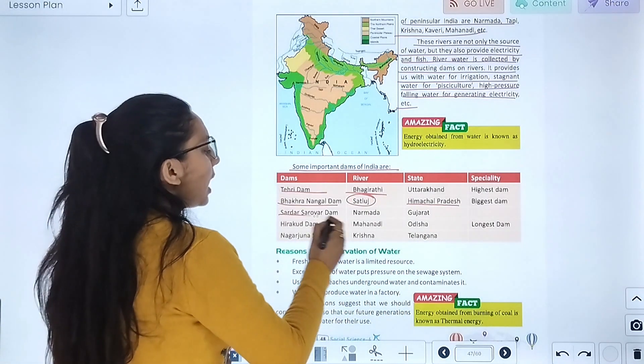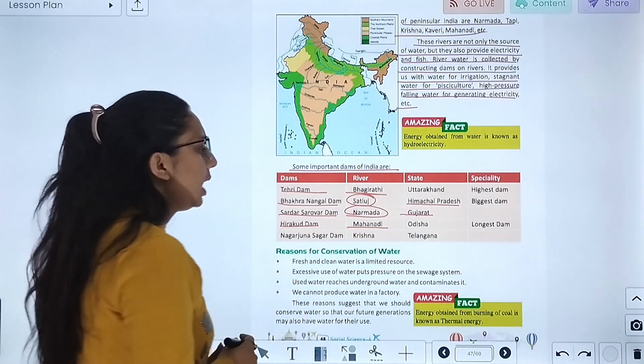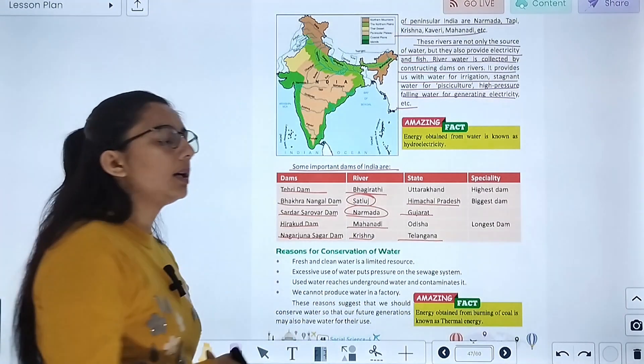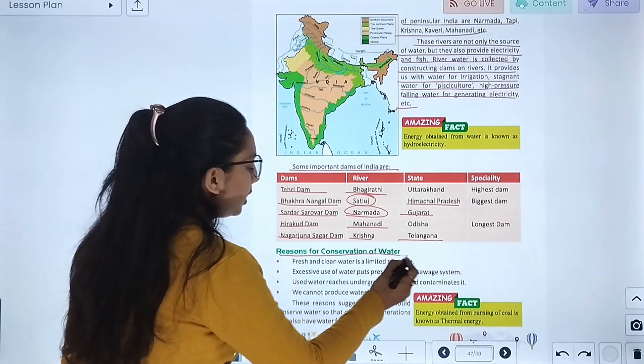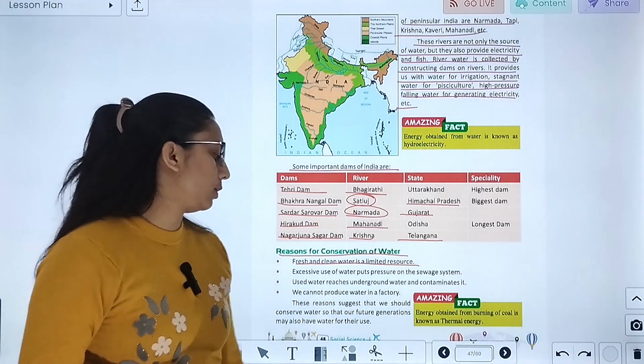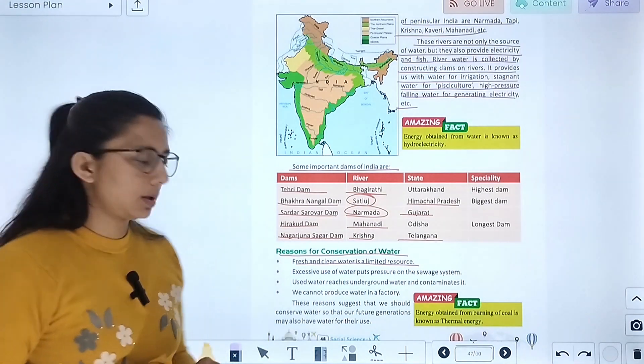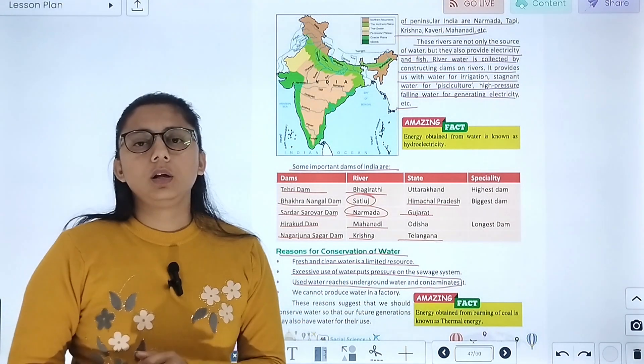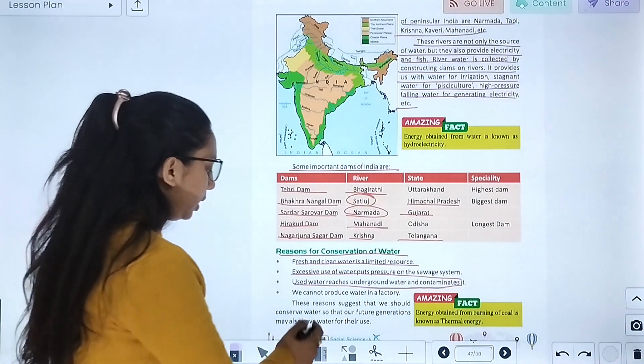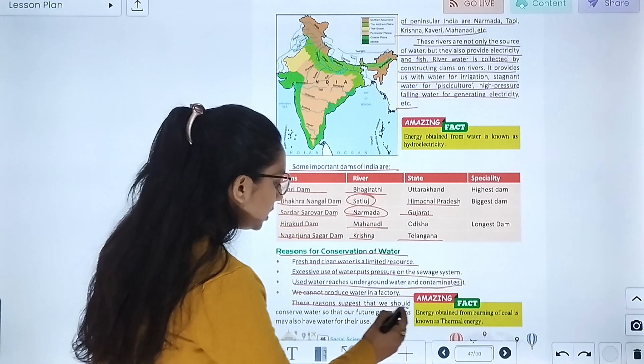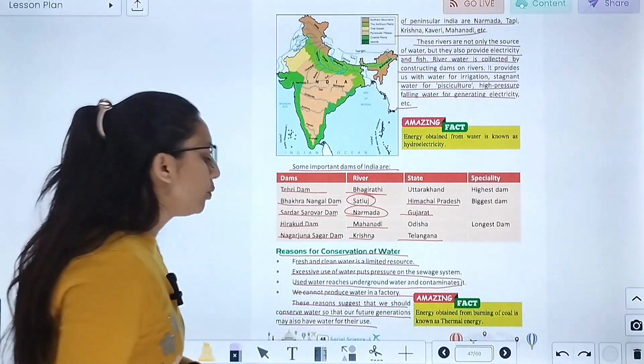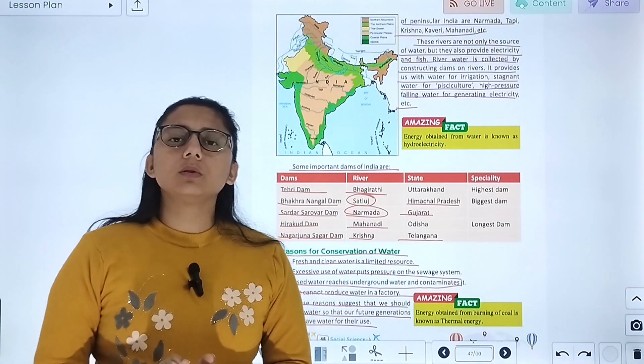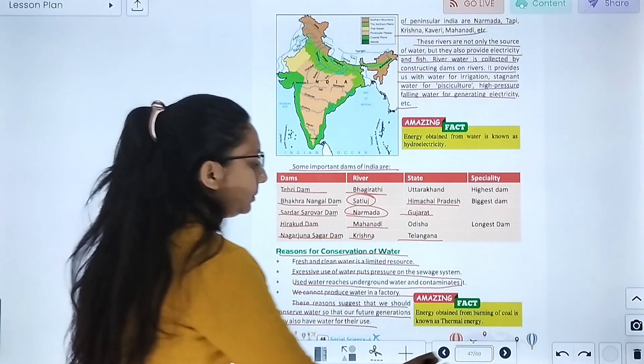Reasons for conservation of water. Fresh and clean water is a limited resource. Excessive use of water puts pressure on the sewage system. Used water reaches the underground water and contaminates it. We cannot produce water in a factory. These reasons suggest that we should conserve water so that our future generations may also have water for their use. We need to conserve water so the future generation will also use water efficiently.